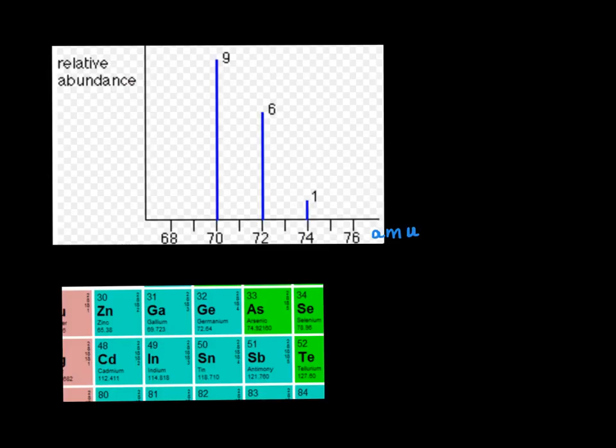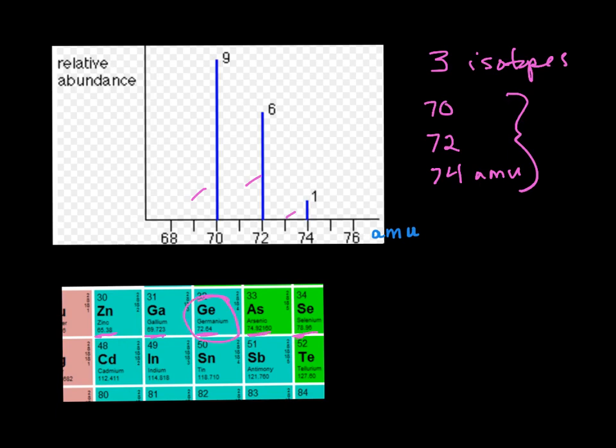So let's look at a few other mass specs and see if we can figure out what they're showing us. So first of all, this is the mass spec of an atom. Can you tell me how many isotopes it has? Well, one, two, three. So we know there's three isotopes, and we know they weigh about 70, 72, and 74 amu. So the atomic mass must be somewhere between 70 and 72. Now on the periodic table, the atomic masses are these numbers that are not whole numbers. So this looks like it must be germanium. So this is a mass spec for germanium.